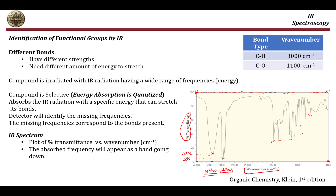Based on these peaks, we can identify functional groups. Absorption at 3400 cm⁻¹ indicates an oxygen-hydrogen bond. Absorption at 1700 cm⁻¹ indicates a carbon-oxygen double bond, or carbonyl group. We will learn more about this in the upcoming slides and the next video.